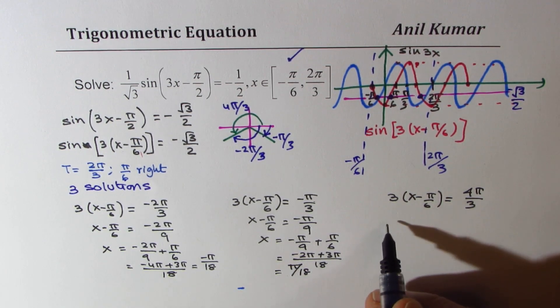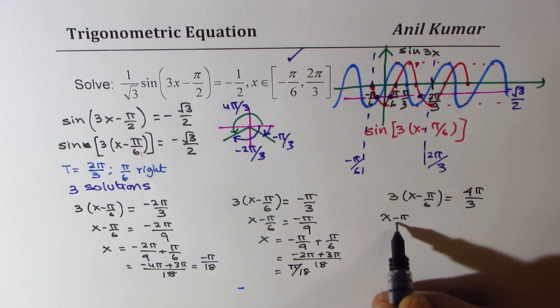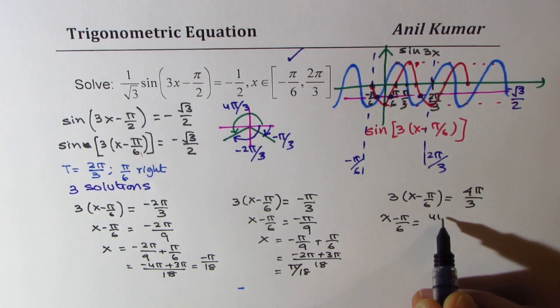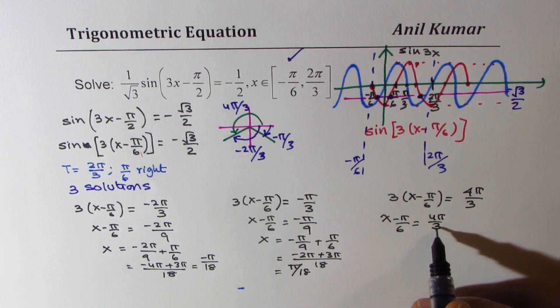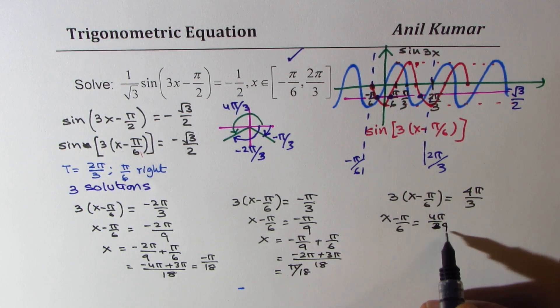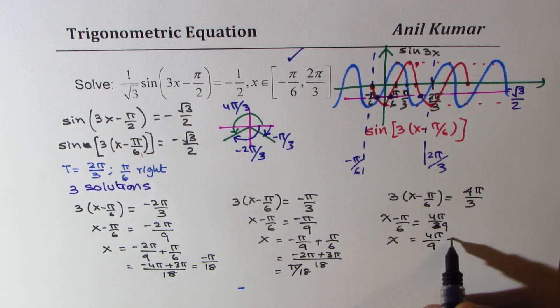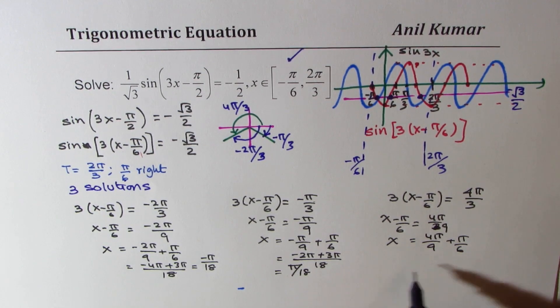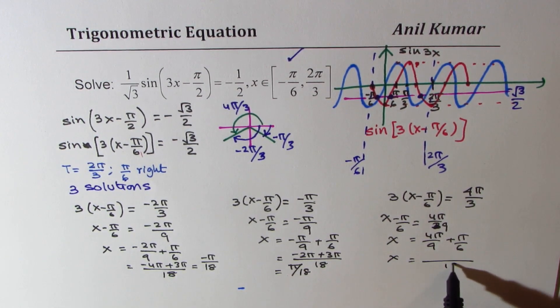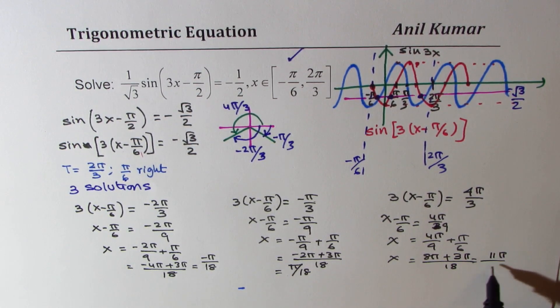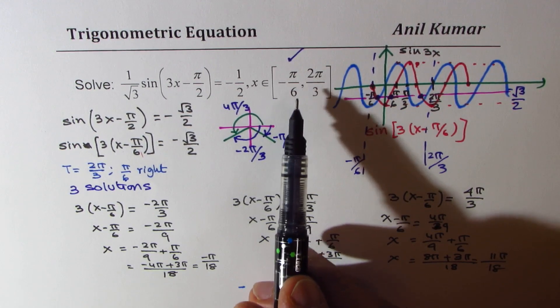And the third one is x minus pi by 6 equals 4 pi by 9. So x equals 4 pi by 9 plus pi by 6. With 18, you get 8 pi plus 3 pi. So 11 pi by 18.